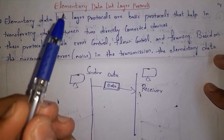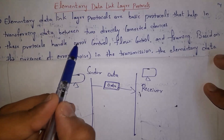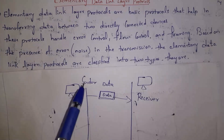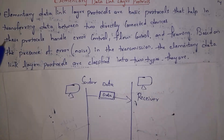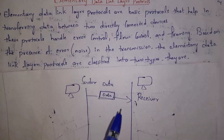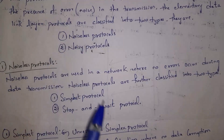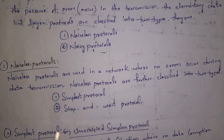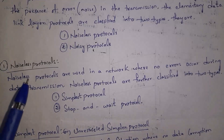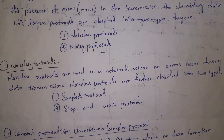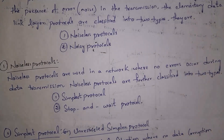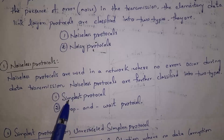Elementary data link layer protocols handle error control, flow control, and framing. Since noise means error, based on errors in transmission, elementary data link layer protocols are classified into two types: noiseless protocols and noisy protocols. In noiseless protocols, the data is successfully reached to receiver — there will not be any errors. Noiseless protocols are classified into two types: simplest protocol and stop and wait protocol.